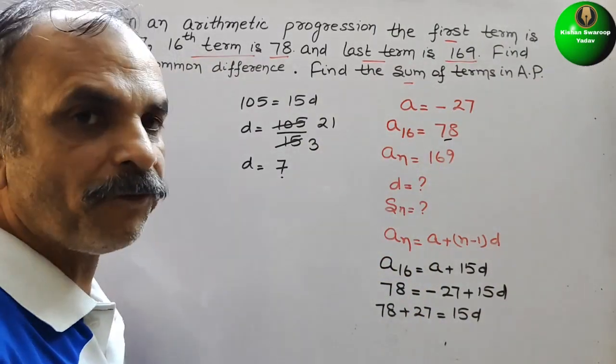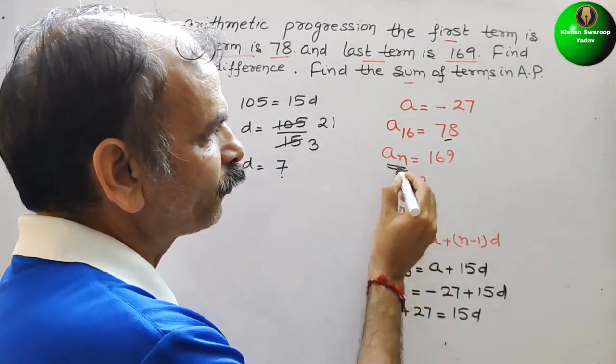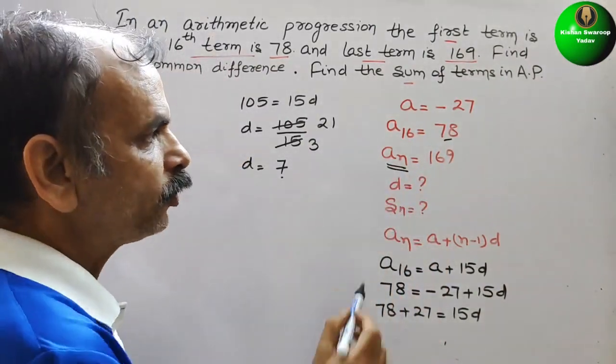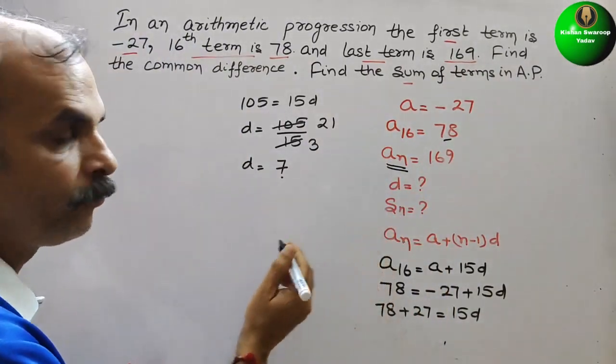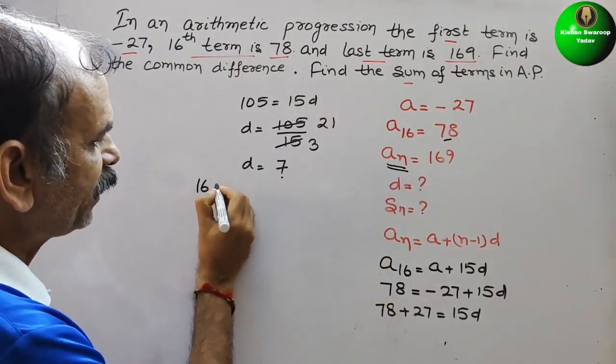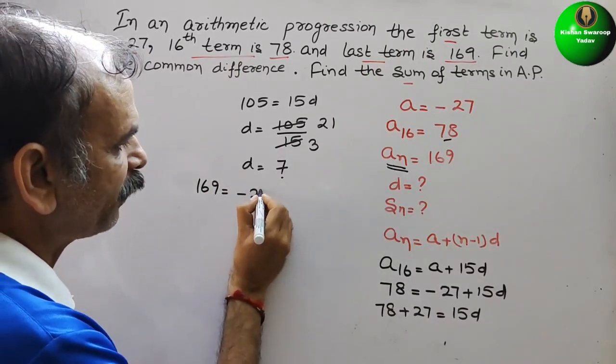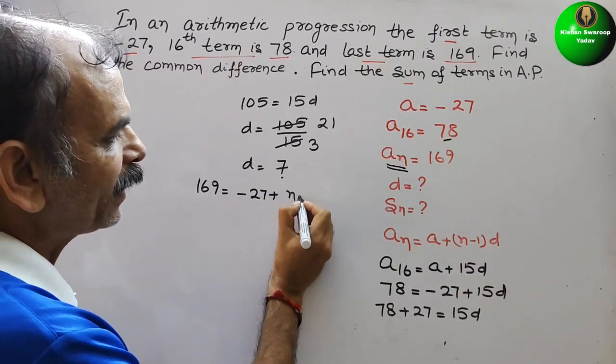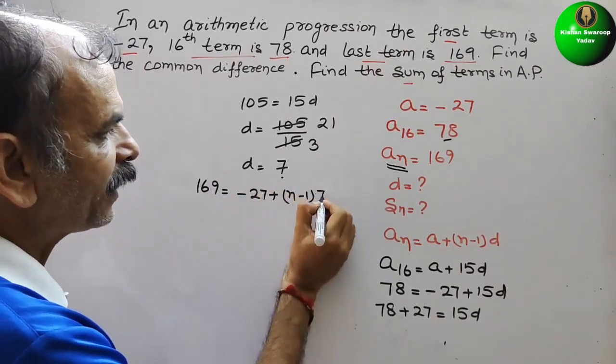So now we will find out how many terms are there with the help of AN formula. Here AN they have given 169. Same formula. So 169 equals A is minus 27 plus N minus 1, and D is 7.